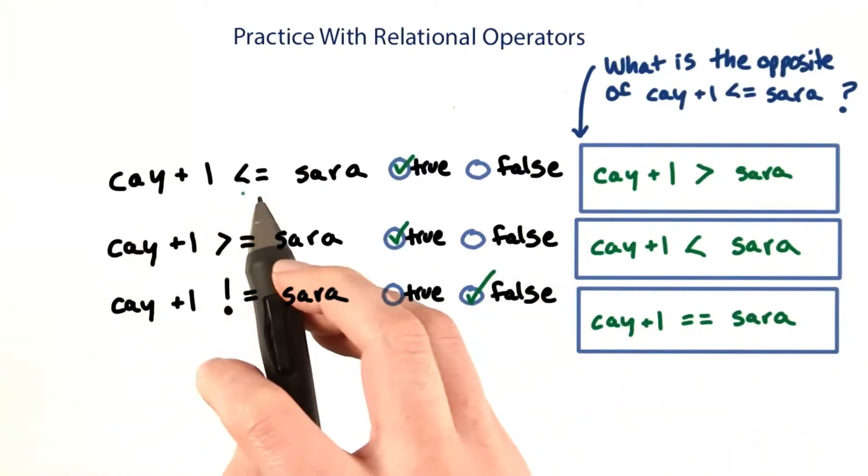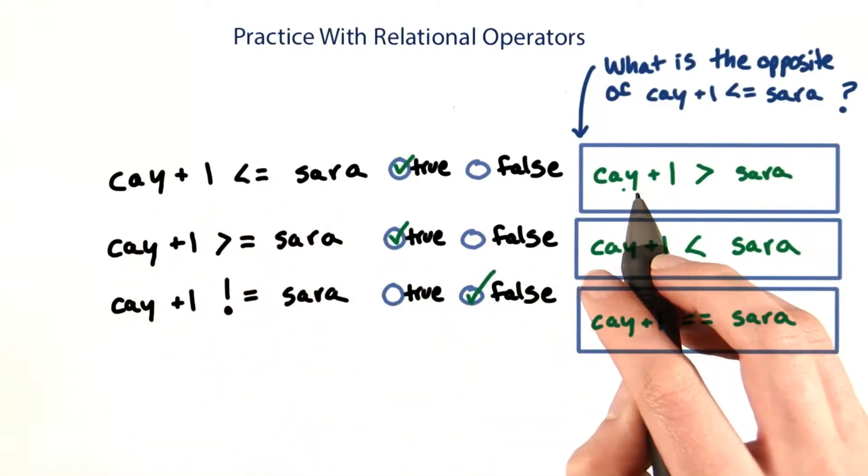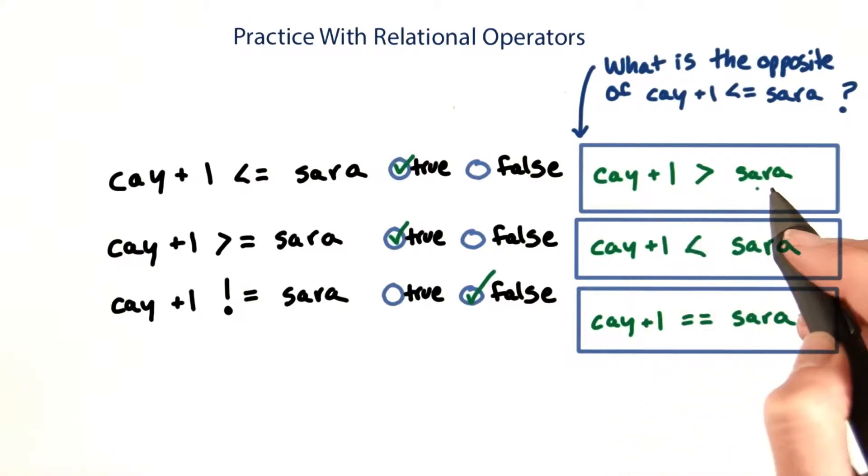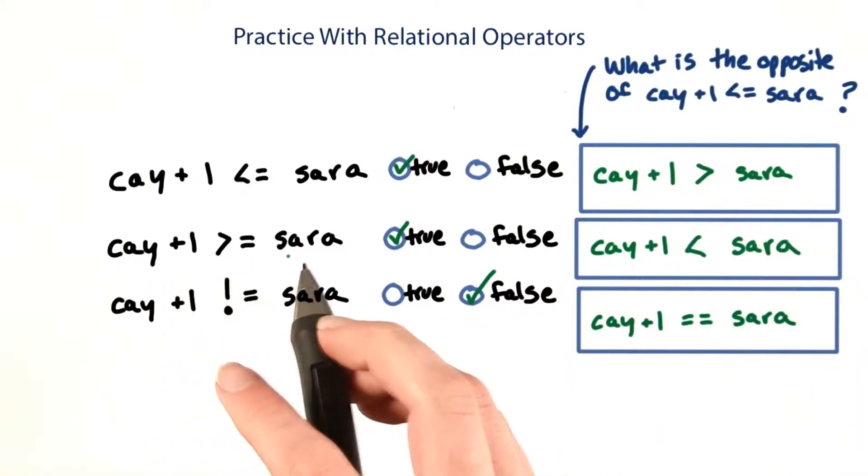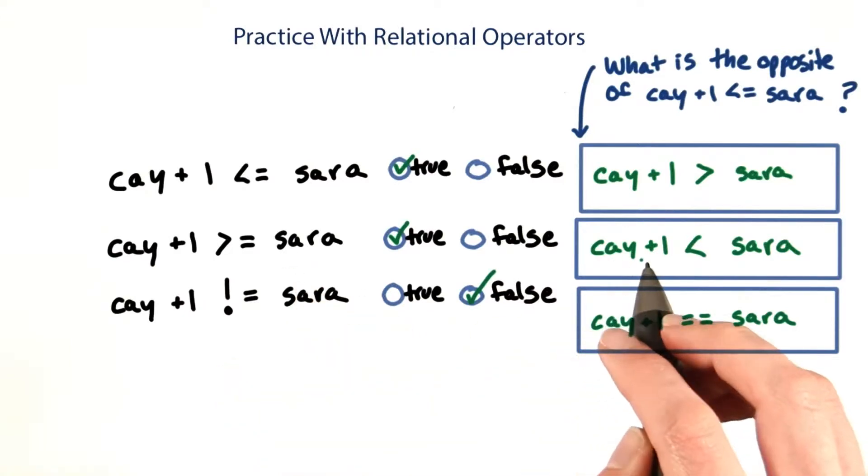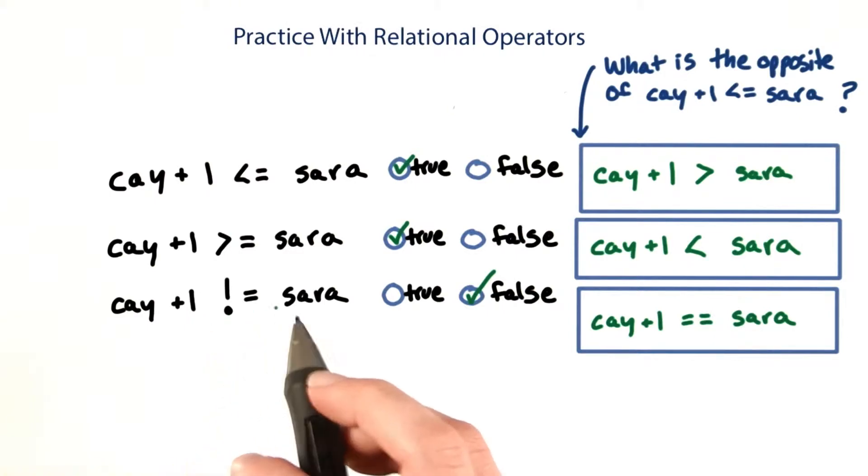The opposite of chi plus 1 is less than or equal to Sarah is chi plus 1 is greater than Sarah. The opposite of chi plus 1 is greater than or equal to Sarah is chi plus 1 is less than Sarah. And the opposite of chi plus 1 is not equal to Sarah is chi plus 1 equals equals Sarah.